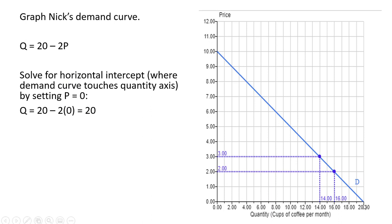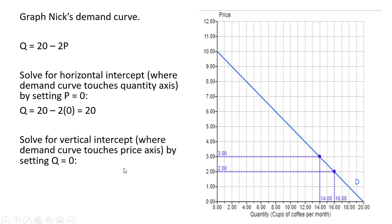Now we're going to get the vertical intercept where the demand curve touches the price axis. To get that we set Q = 0 in the demand equation, so 0 = 20 - 2P. Solving for P by dividing through by 2, the price equals $10. So when the price is $10, the quantity demanded is zero.